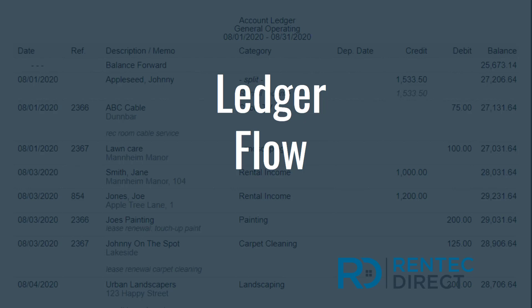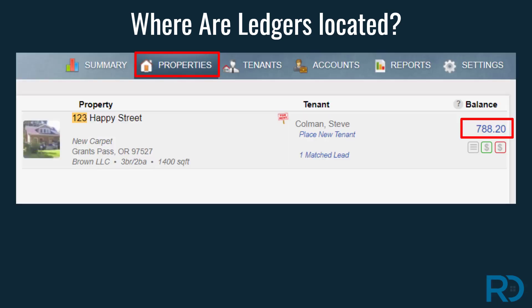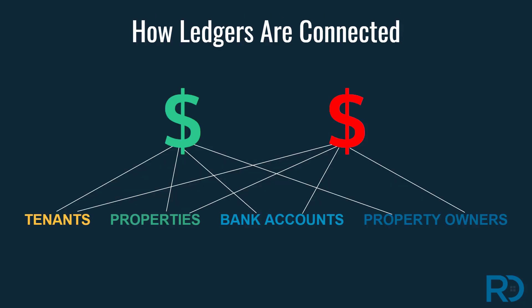Understanding how your transactions flow through the ledgers in your RentecDirect account is an important skill. Property, tenant, bank account, and property owner ledgers are found in the pages in your software. Open a ledger by clicking on the ledger balance on each page. Ledgers are seamlessly connected in your account, which saves you time. Transactions can apply to only one ledger or multiple ledgers.